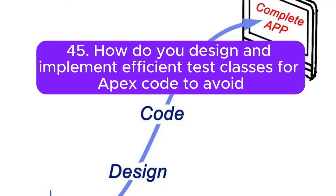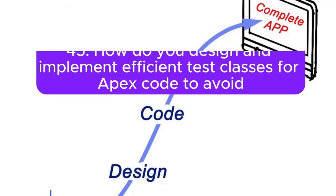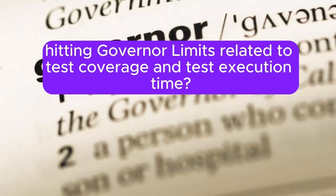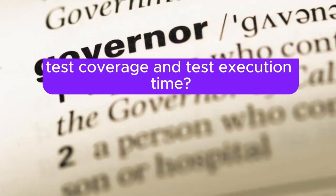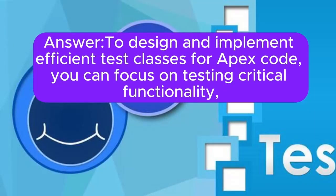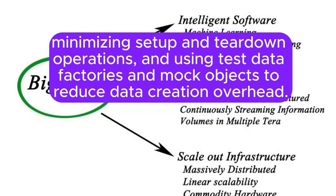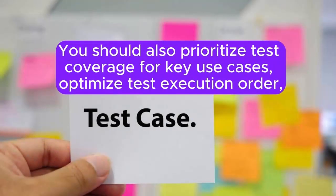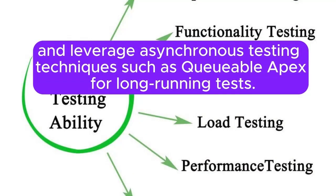Question 45: How do you design and implement efficient test classes for Apex code to avoid hitting governor limits related to test coverage and test execution time? Answer: To design and implement efficient test classes, you can focus on testing critical functionality, minimizing setup and teardown operations, and using test data factories and mock objects to reduce data creation overhead. You should also prioritize test coverage for key use cases, optimize test execution order, and leverage asynchronous testing techniques such as Queueable Apex for long-running tests.